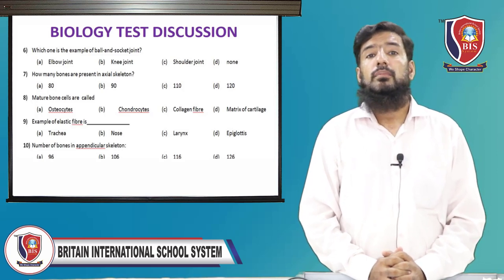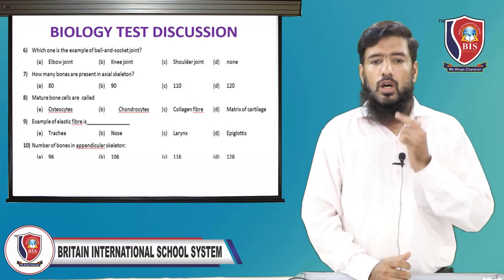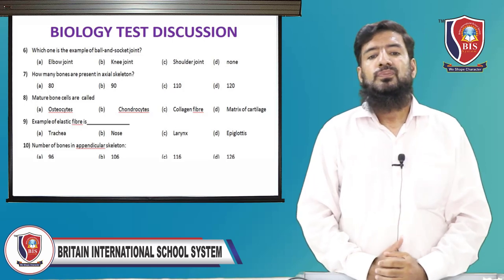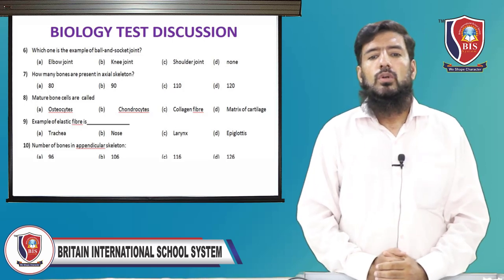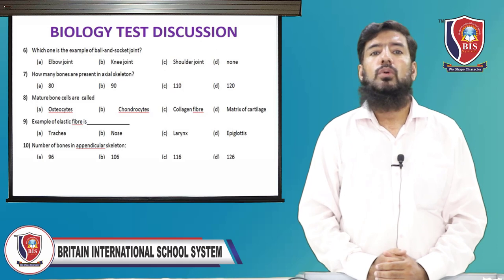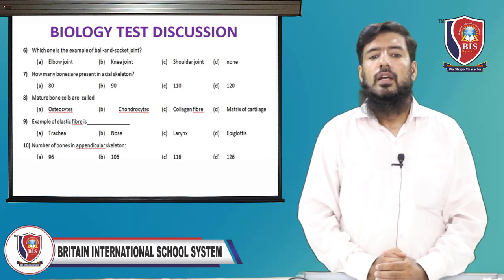MCQ 7: how many bones are present in the axial skeleton? The axial skeleton has 80 bones — option A is the correct option.